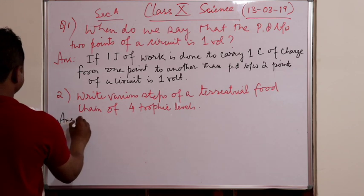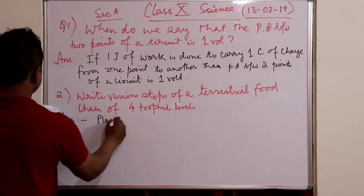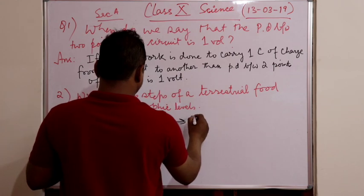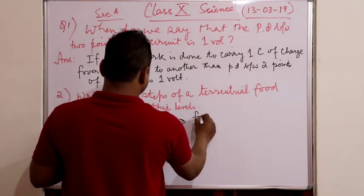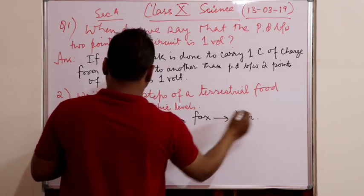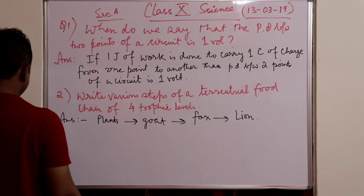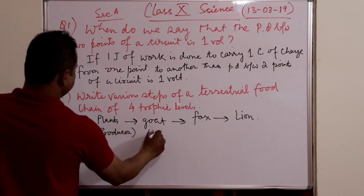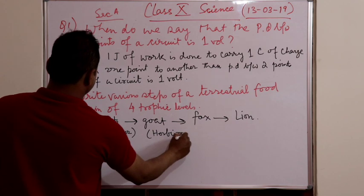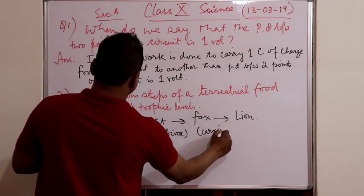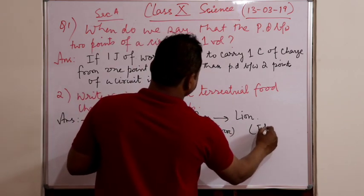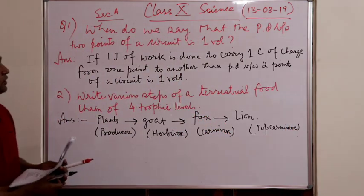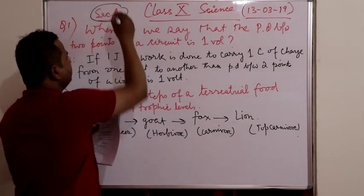So the second question, you can write any food chain. I am writing the simplest one: plants to goat to fox to lion. You can write any other also. This is producer, this is herbivore, this is carnivore and this is the top carnivore.